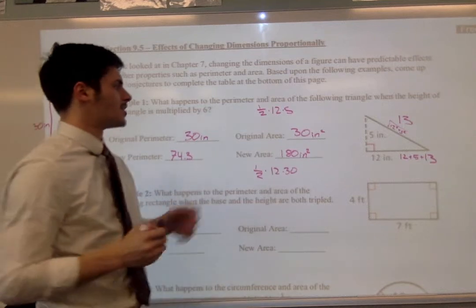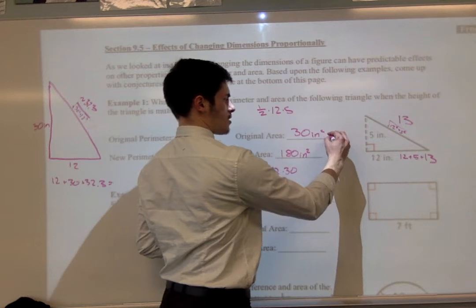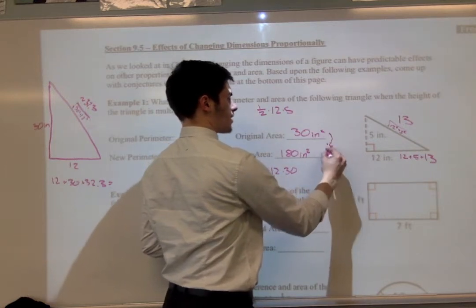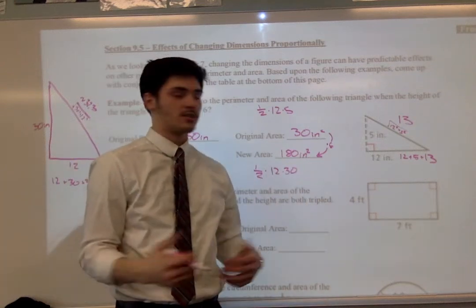And so in this one, it's nice because, okay, to get from 30 to 180, we just multiply by 6. And what else do we multiply by 6? We multiply the height by 6.